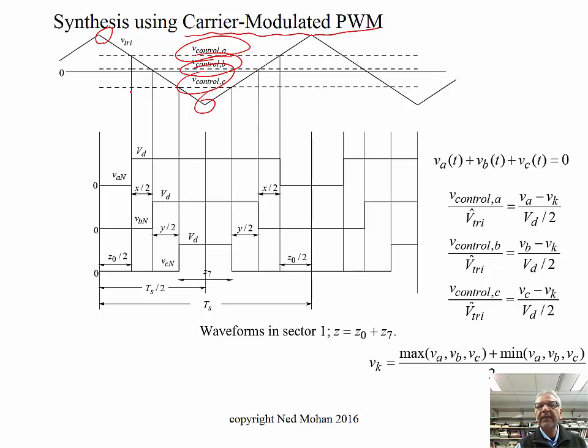And we know that we can also derive this, that instantaneously sum of all these three voltages is equal to zero. And so what we need to do is to take these voltages that we need to apply to the machine and subtract them with a quantity called V sub K, which is written over here. And I'll describe it in a second and divide by V D over two. And that gives us the control voltage for phase A.